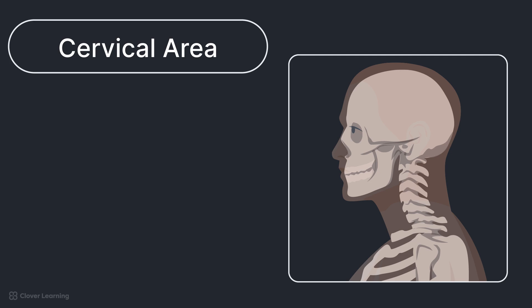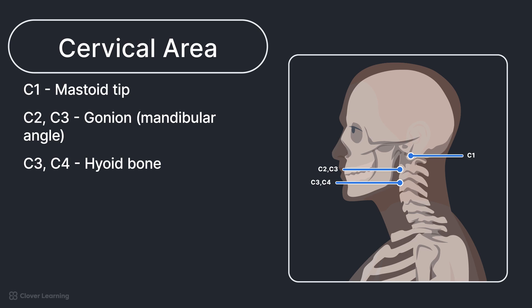Body structures and corresponding external landmarks for the cervical area include C1, mastoid tip, C2 and C3, gonian, or mandibular angle, C3 and C4, hyoid bone, C5, thyroid cartilage, C7 and T1, vertebra prominence.